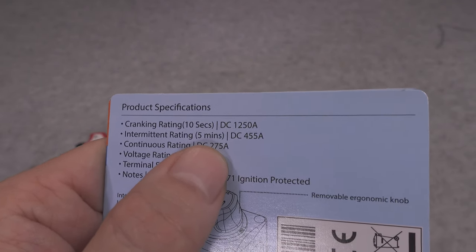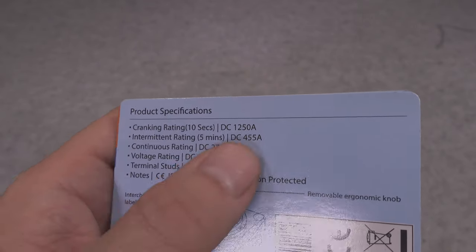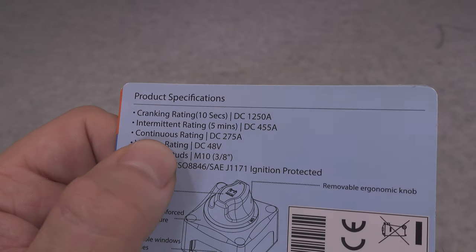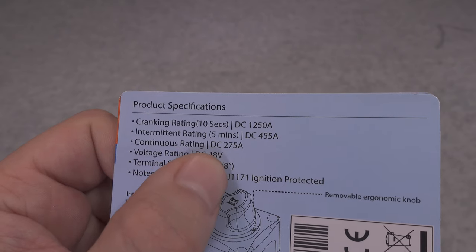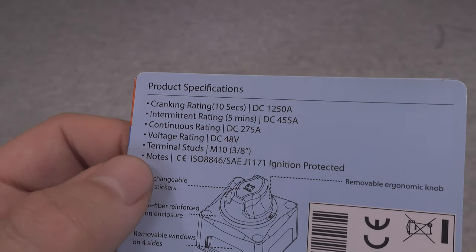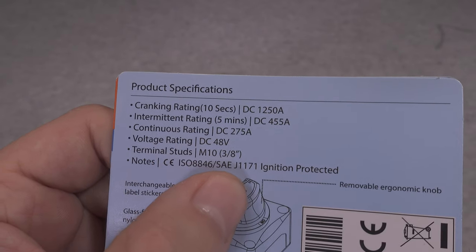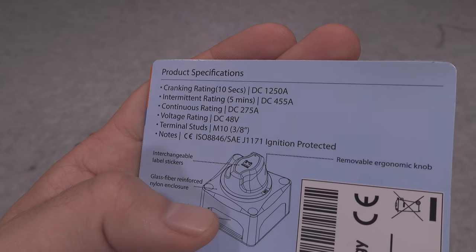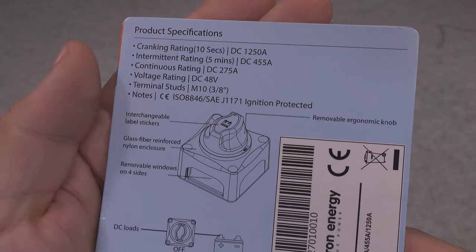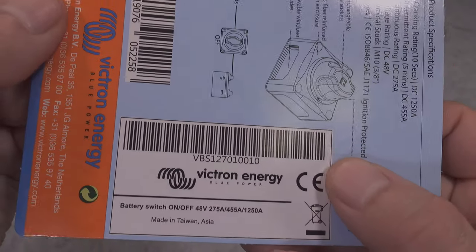So if you've got an inverter and you would like to just boil a tea, if you can make it under five minutes then no problem. We've got the continuous rating of 275 amps which is absolutely beautiful, and the input maximum voltage of 48 volts. Terminal studs are in the metric M10 and this is how it presents.